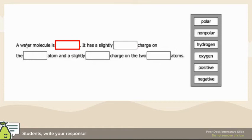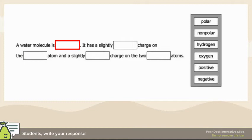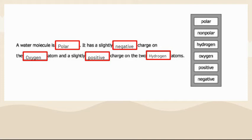A water molecule is polar. It has a slightly negative charge on the oxygen and a positive charge on the two hydrogen atoms. Water is always polar. Since there are two hydrogen atoms in H2O, the blank referring to 'two atoms' goes to hydrogen, which means the other goes to oxygen. There are more positive atoms in a water molecule than negative atoms.